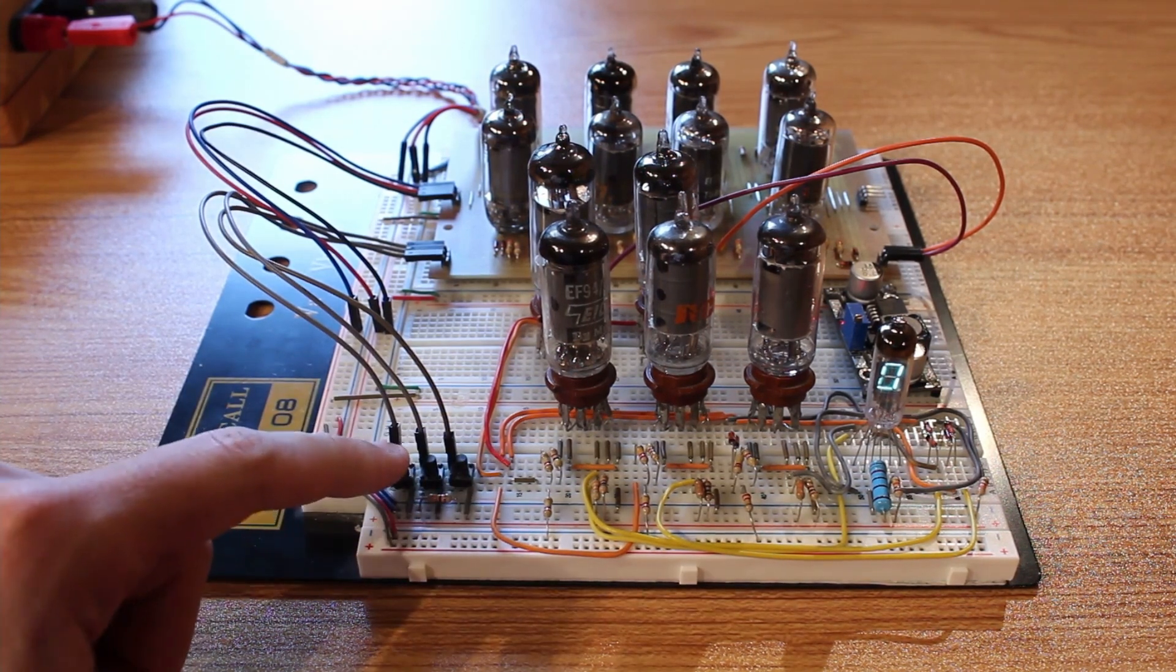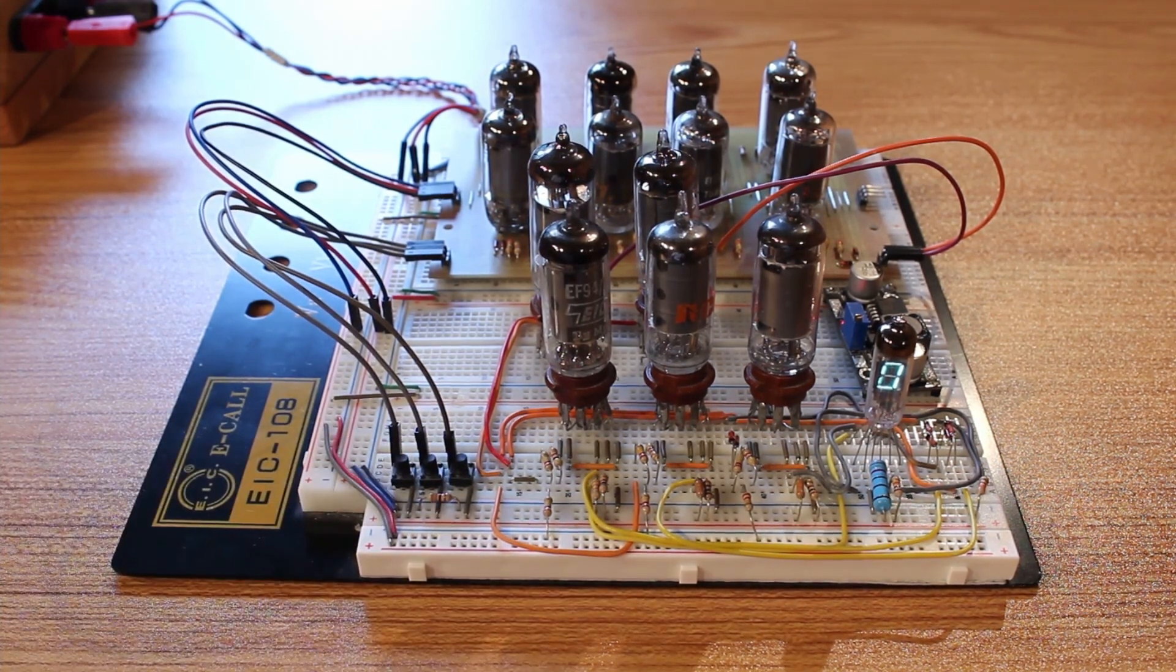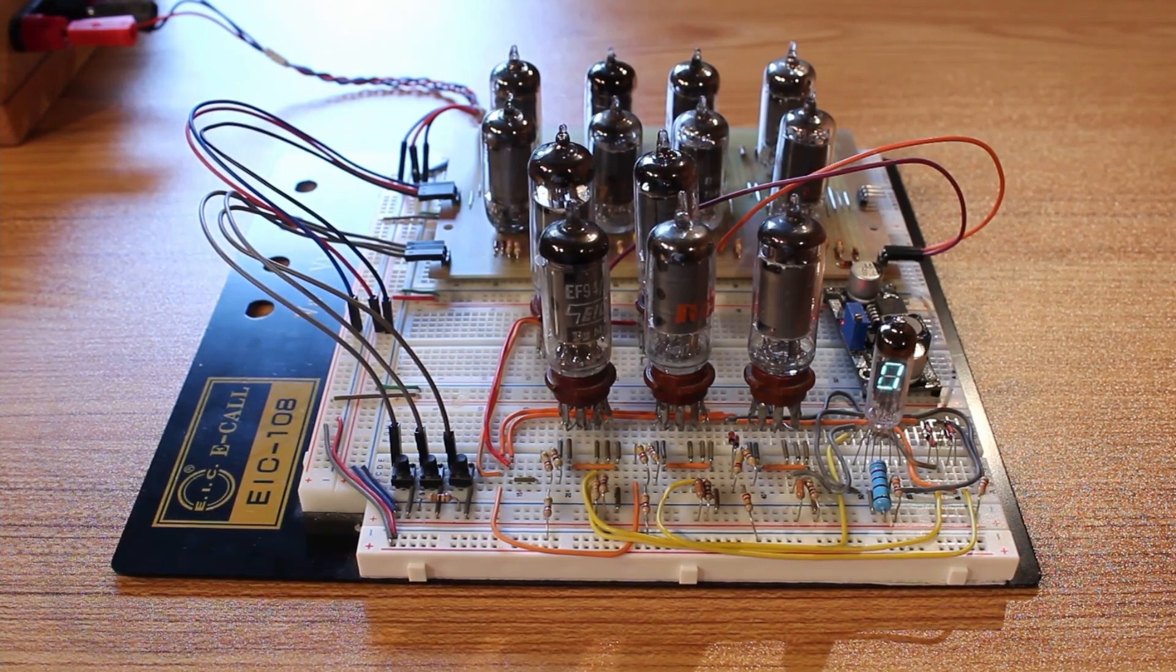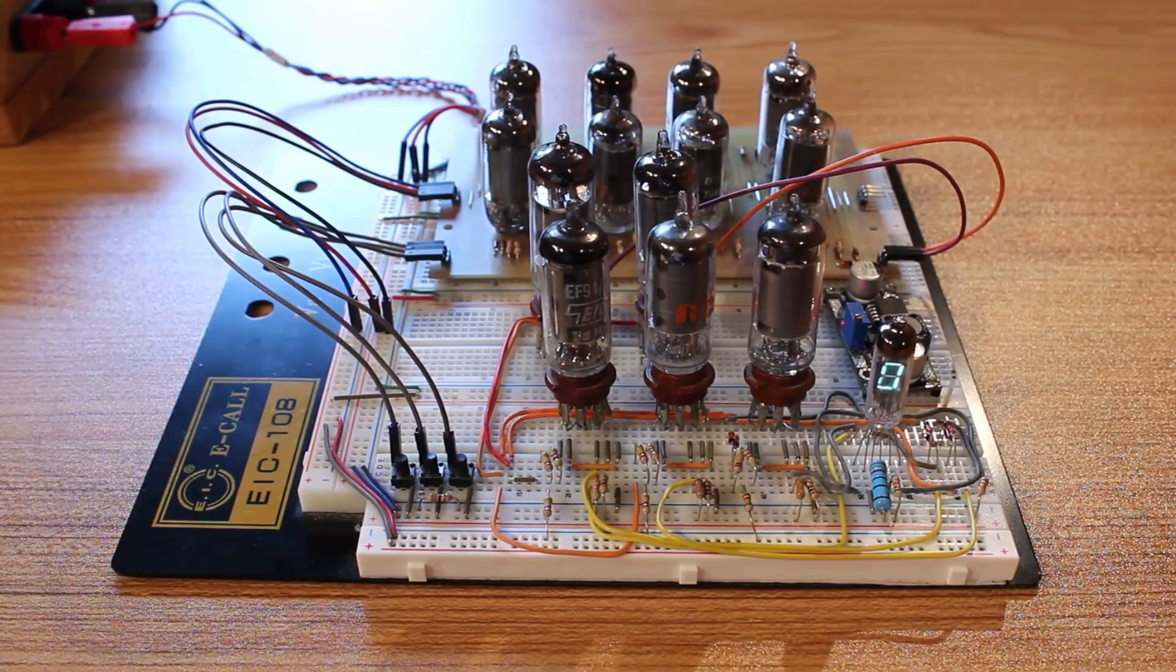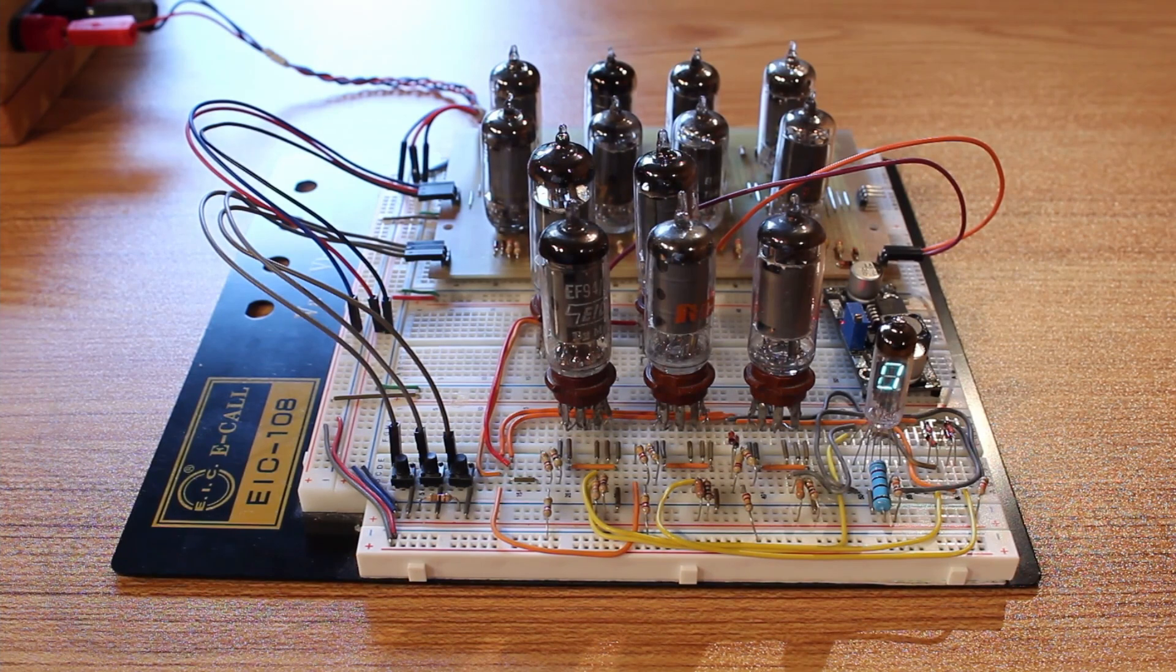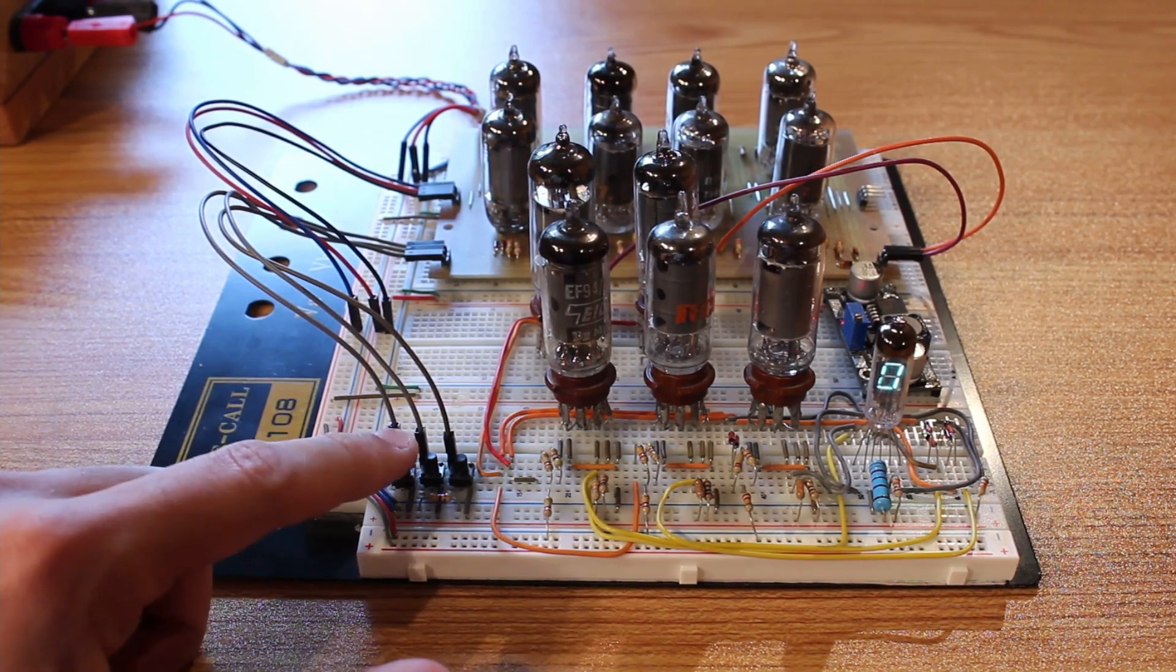So right now, all three of our inputs are off, which means that our output is going to be zero, zero, which is zero. And you can see our VFD here is displaying zero. Awesome. If I push just one of these buttons, that'll be one plus zero plus zero, which means that our output will be zero, one, which is equal to one. So let's just push one of those buttons. Yeah, there we go.